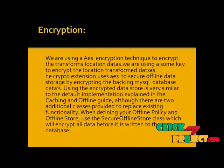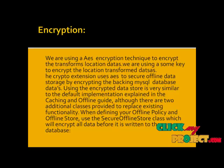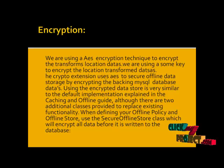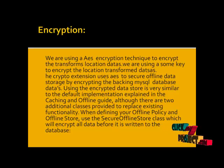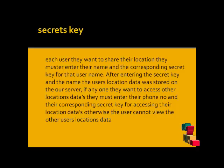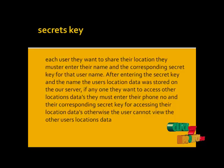For encryption, we use Advanced Encryption Standard (AES) techniques to encrypt the transformed location data, using a key to encrypt the location-transform data. AES is used to secure offline data storage by encrypting the backing database data. The encrypted data storage works similarly to the default implementation, encrypting all data before it is returned to the database. For the Secret Key module, each user who wants to share their location must enter their phone number and corresponding secret key for that username.